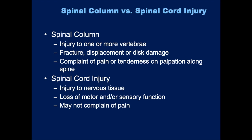Any injury to the spinal column is an injury to one or more of the vertebrae — these injuries can be a fracture of the actual vertebral body or a dislocation. If the patient has an injury to the spinal column, they typically complain of pain or tenderness somewhere along the spine when you're palpating it. Remember, this doesn't necessarily mean the spinal cord has been injured. A spinal cord injury involves damage to the actual nervous tissue encased within the spinal column, which disrupts one or more of the motor or sensory tracts.